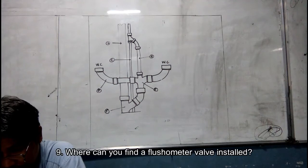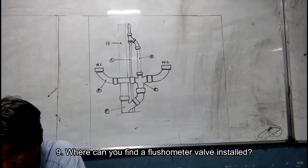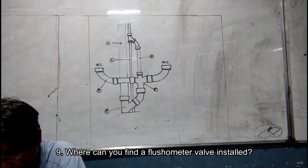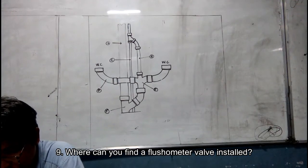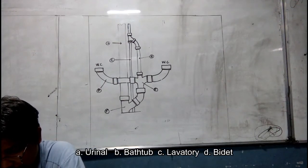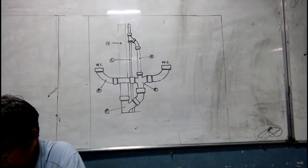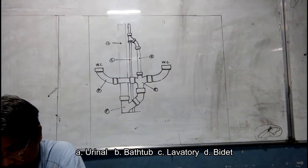Number nine. Where can you find a flushometer valve installed? A. urinal, B. bathtub, C. lavatory, D. bidet.